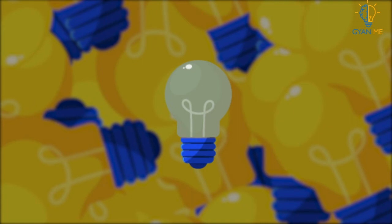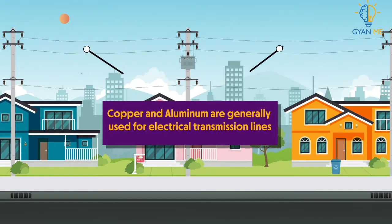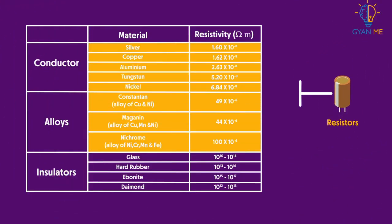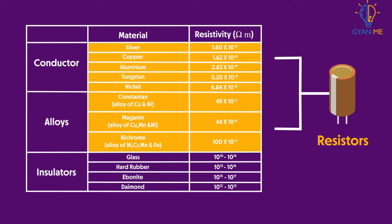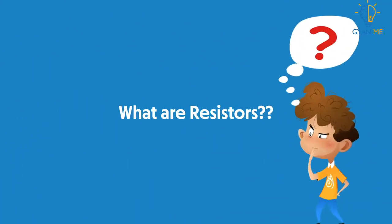We use tungsten exclusively for the filament of electric bulbs, whereas copper and aluminium are generally used for electrical transmission lines. Materials having considerable resistivity are used to make resistors, which in turn are used to produce resistance in the circuit. Now let us know more about resistors.